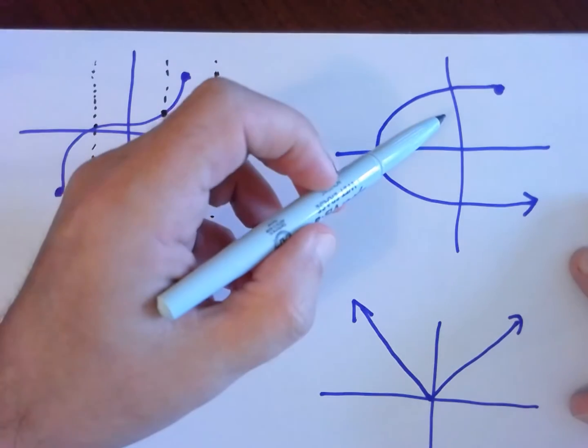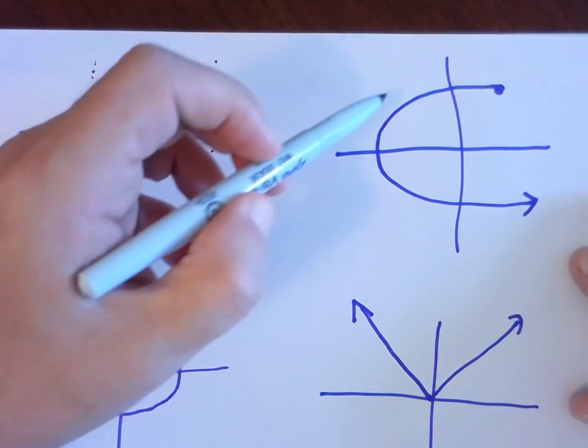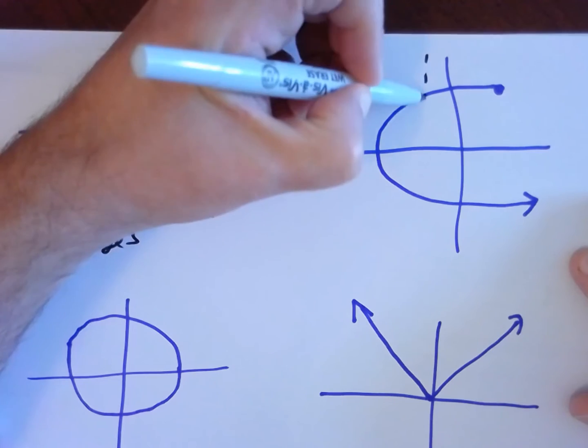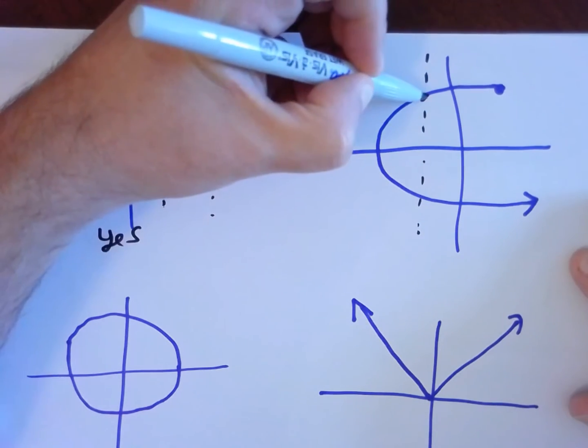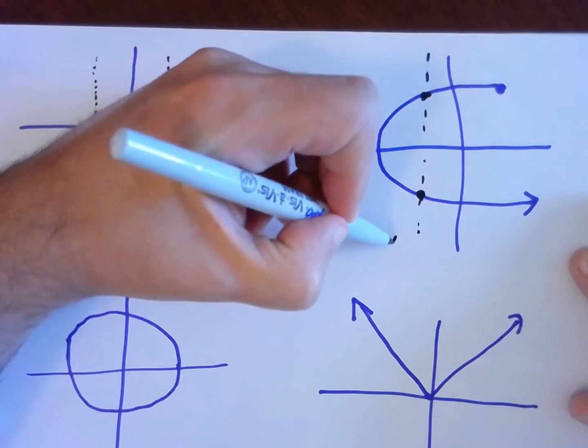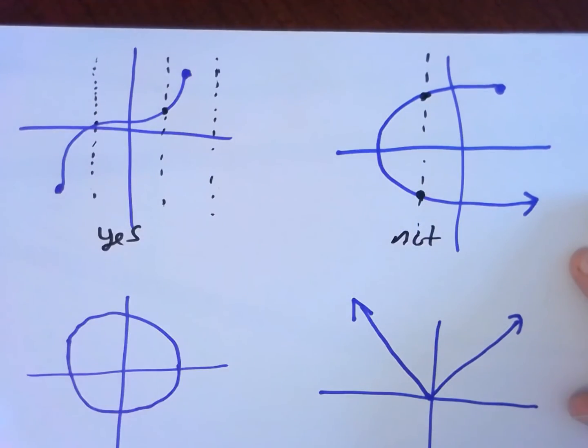In this picture, does this graph represent a function? No. This vertical line, for example, there's one of them that's bad, hits the graph twice. This is not a function.